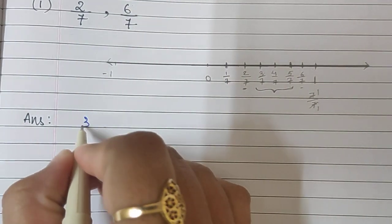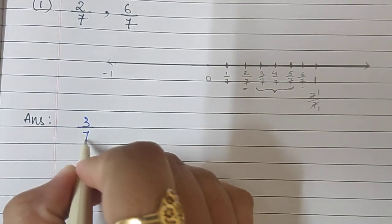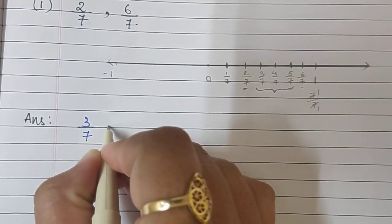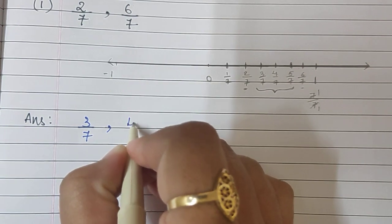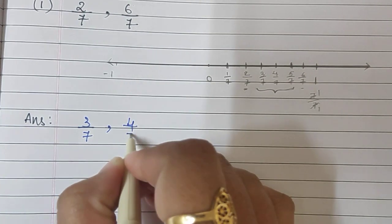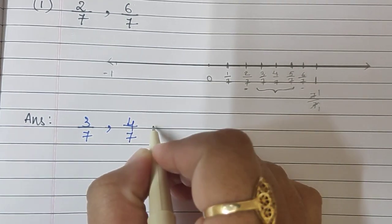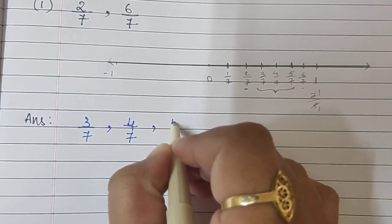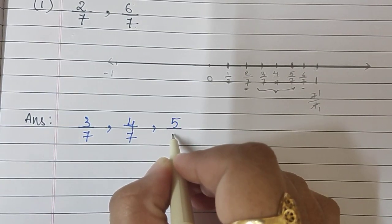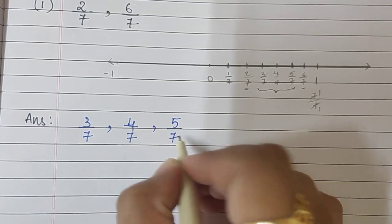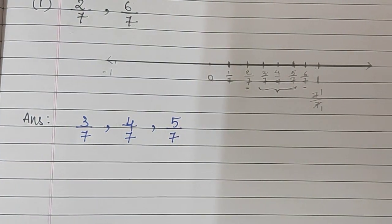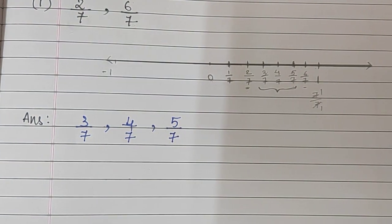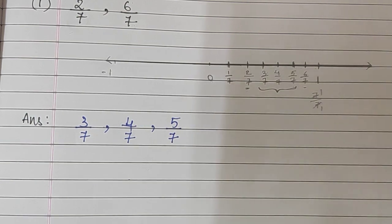The numbers between 2/7 and 6/7 are 3/7, 4/7, and 5/7. Simple enough. Let's look at sum number 2.